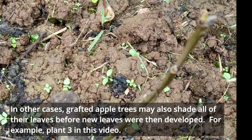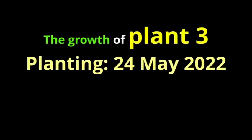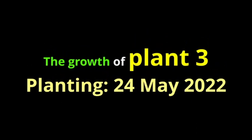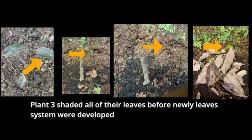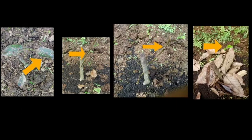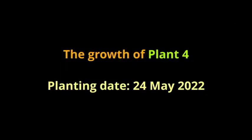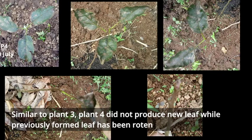In other cases, a grafted apple tree may also shed all of its leaves before new leaves were developed. Similar to plant three, plant four did not produce new leaves, while the previously formed leaf had been rotten.